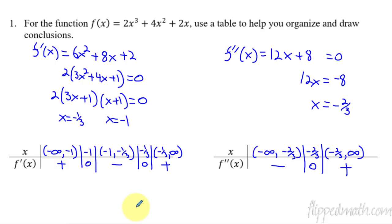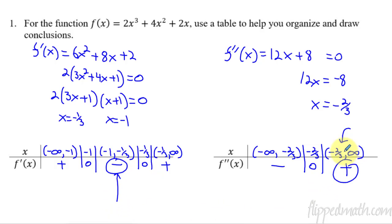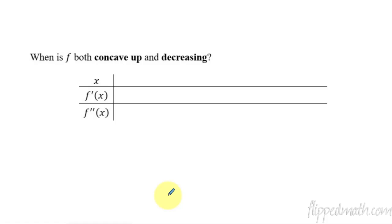When is f both concave up and decreasing? Concave up happens on the interval from negative two thirds to infinity, and decreasing happens when the derivative is negative, which is on the interval from negative one to negative one third. You're trying to figure out where these two things overlap. If you can see it — between negative one and negative one third it's decreasing, and from negative two thirds to infinity it's concave up — can you identify where it overlaps? For many students, they need to see it all put together on one chart.